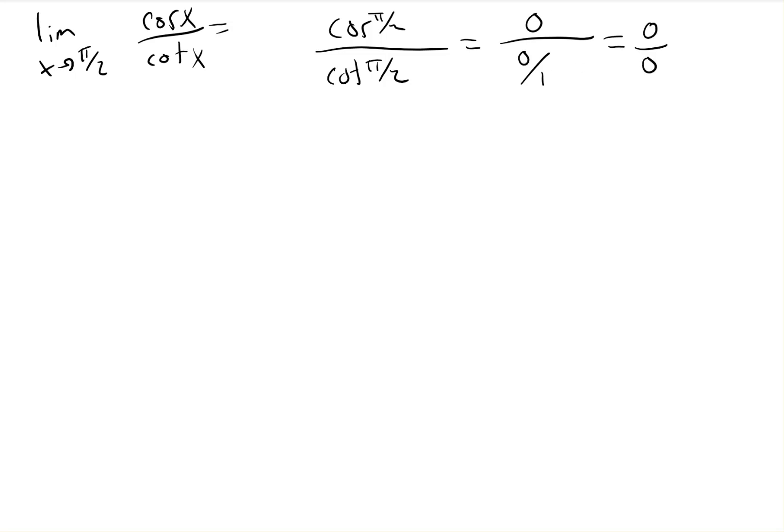But we get 0 over 0, an indeterminate form. If we think about our bag of tricks of ways to rewrite this so that we can try substitution again, canceling out or dividing out isn't going to work. There's no factoring to be done.